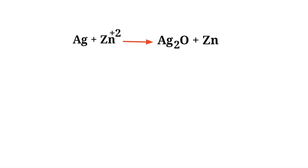First, figure out the reducing and oxidizing agents by the rules of assigning oxidation numbers. In the ion electron method, one reaction is divided into two half reactions, which are then balanced and added together.